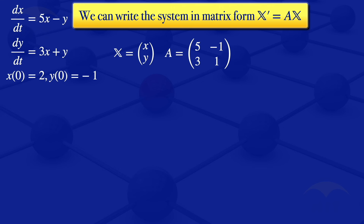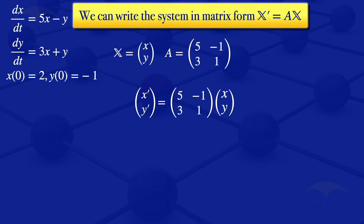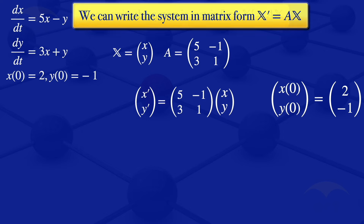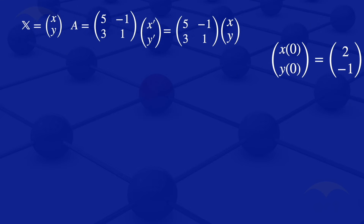Our system in this form has x' and y' equal to the matrix A = [5, -1; 3, 1] multiplied by the column vector [x; y]. The initial conditions are x(0) equals 2 and y(0) equals minus 1. That's our system in matrix form.